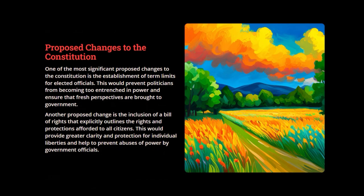Now, the proposed changes for the constitution. One significant proposed change is the establishment of term limits for elected officials. This would prevent politicians from becoming too entrenched in power and ensure that fresh perspectives are brought to government. Another proposed change is the inclusion of a bill of rights that explicitly outlines the rights and protections afforded to all citizens, providing greater clarity and protection for individual liberties and helping prevent abuses of power by government officials.